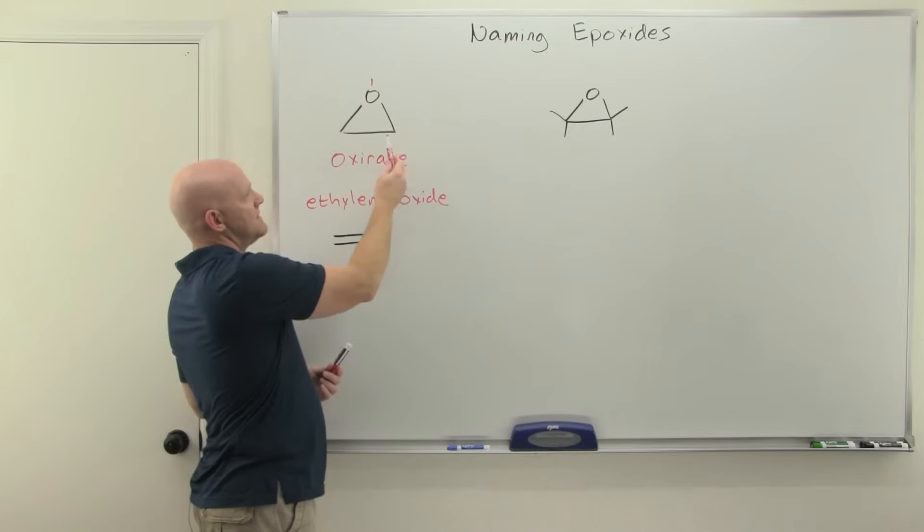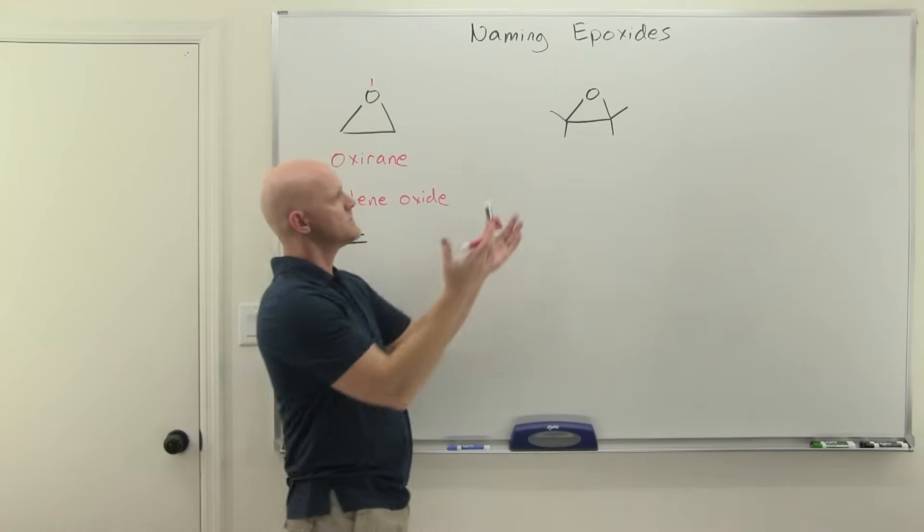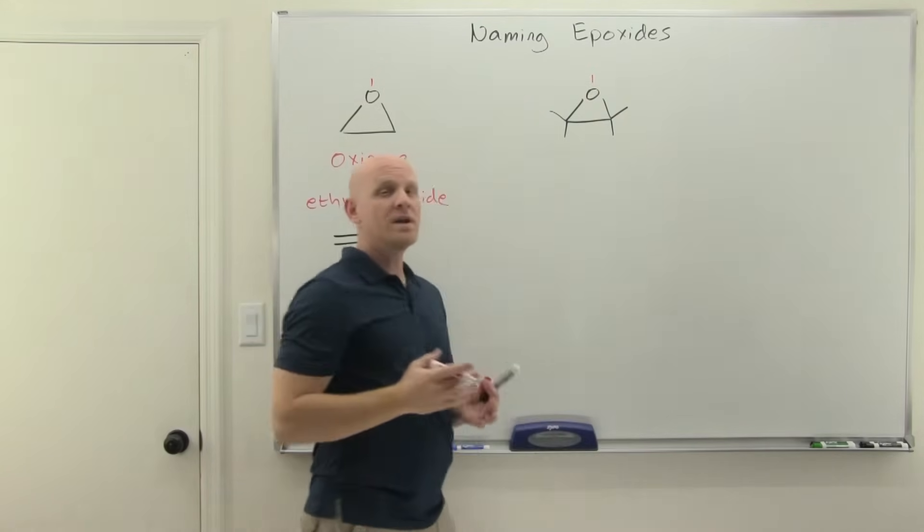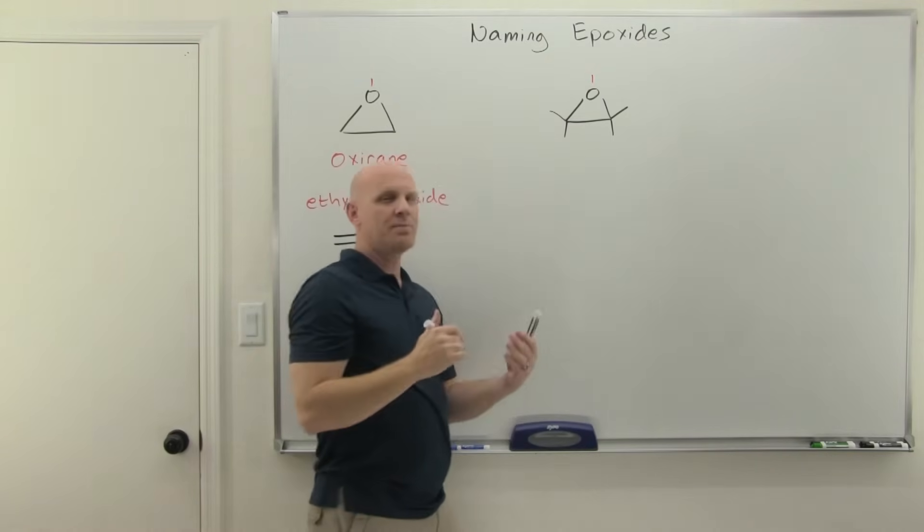And from there, you just name it as atom one, and then one of these is two and one of these is three, based on where you've got substituents located. So if we look at an example here, oxygen again is going to be atom number one if I'm naming it as an oxerane. In this case, I made it symmetrical, and I did this for a couple of reasons.